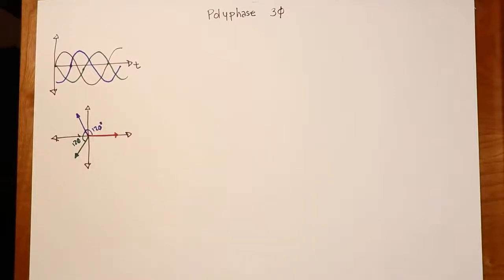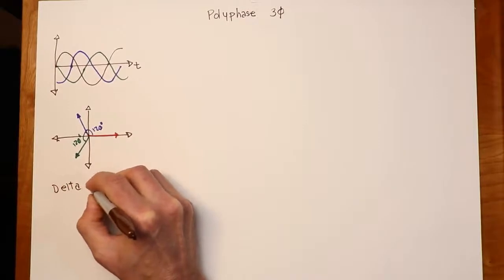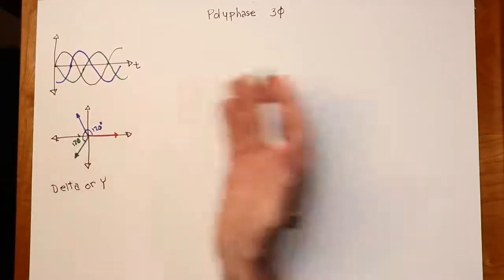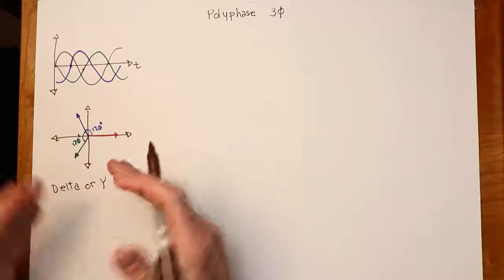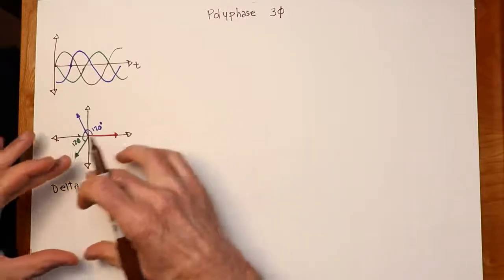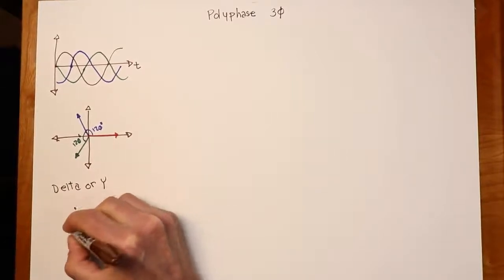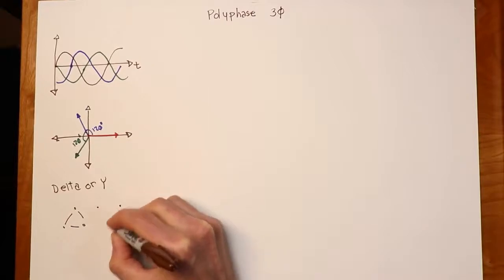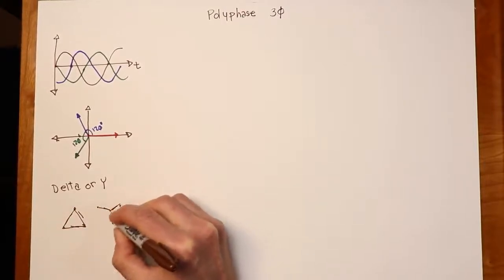That's 120 degrees there and 120 degrees back — this is our polyphase system. Now we can set up both the generator and the load in either what's known as a delta or a Y configuration. The Greek letter delta looks like a triangle, and Y — sometimes spelled 'wye' — looks like a Y or T depending on orientation. There are three points in each configuration: either arranged in a delta like this, or set up in a Y like this.